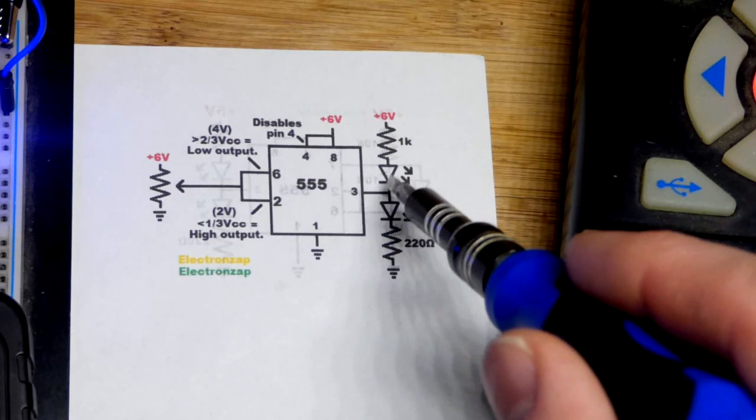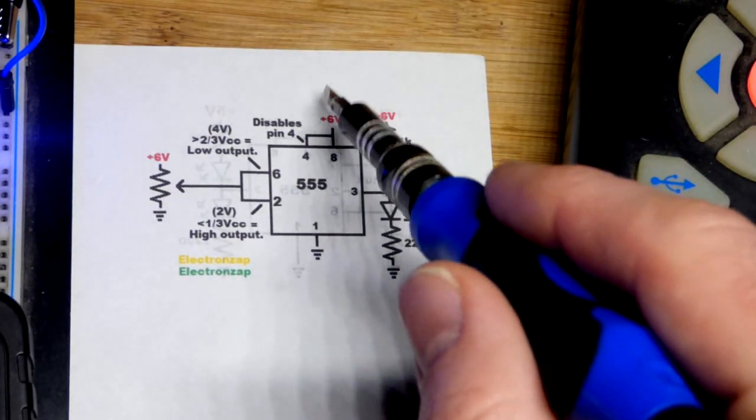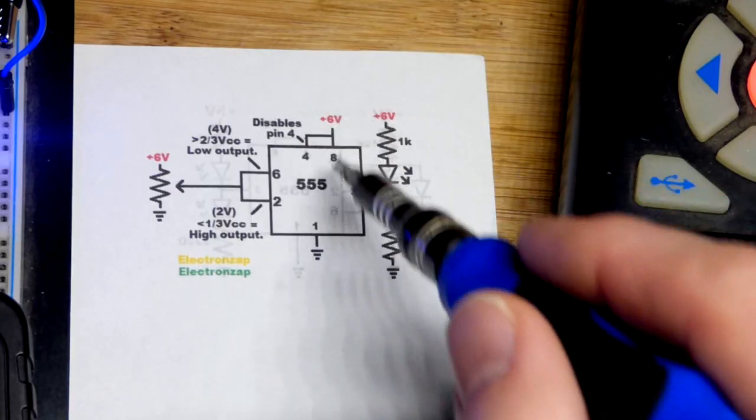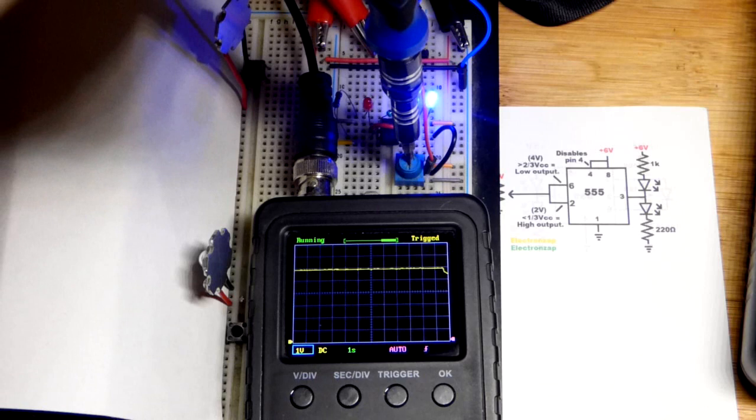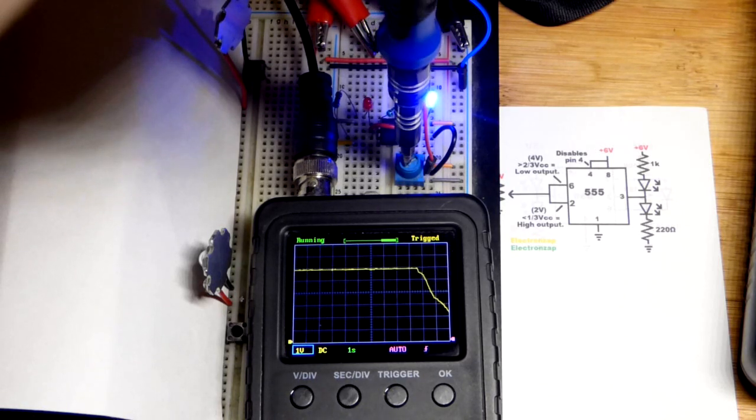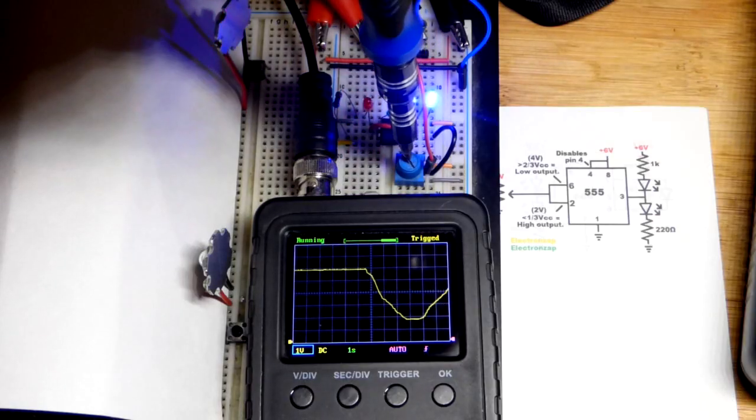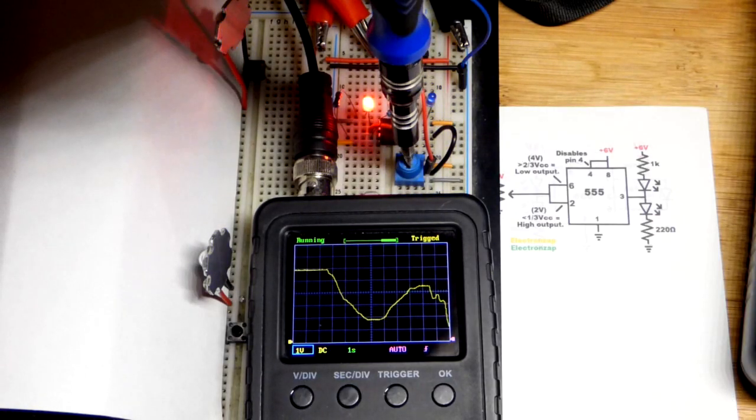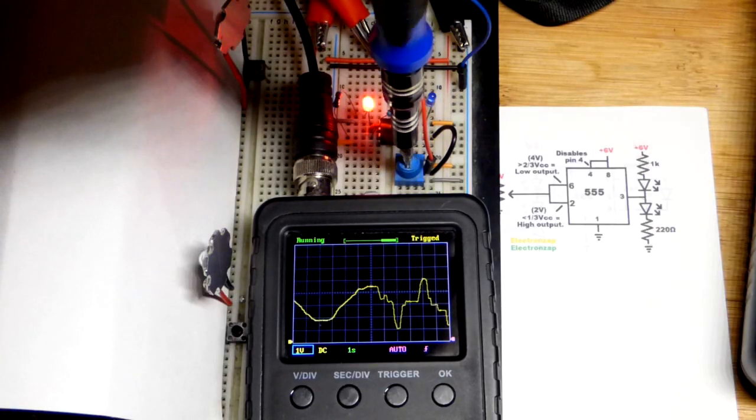I usually use a blue LED to indicate when the output is low and a red LED to indicate when the output's high. You lose a little bit of voltage when the output is high. Here you can see we're working with six volts. We drop below two volts with our signal, the output goes high. Then we go above four volts with our signal, the output goes low. In between, it will be either one, whichever one we last put it into.